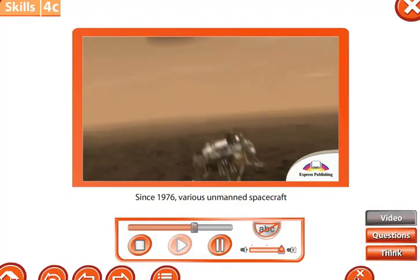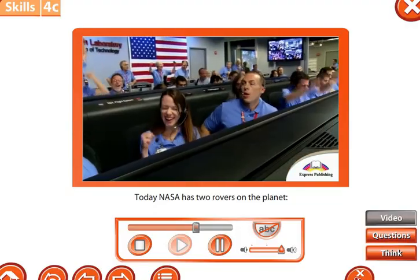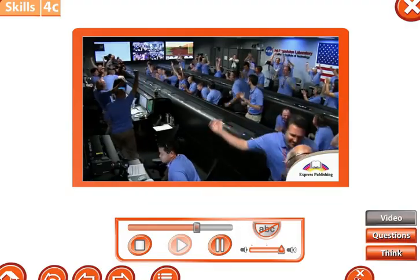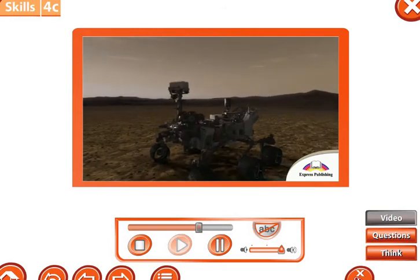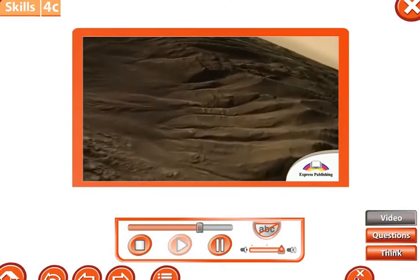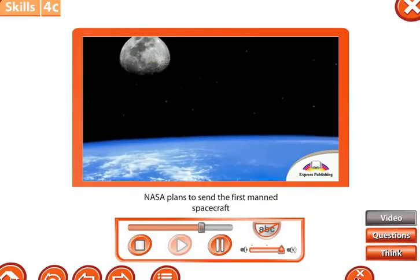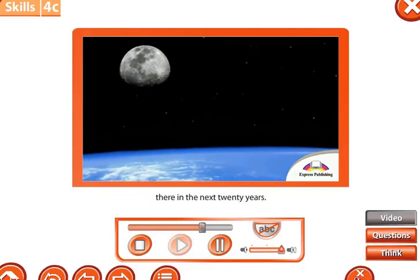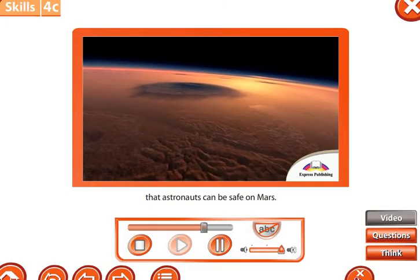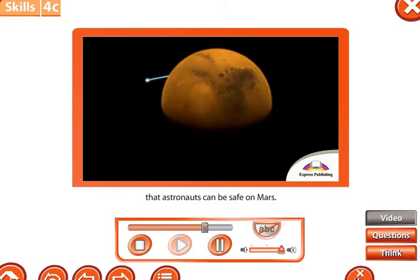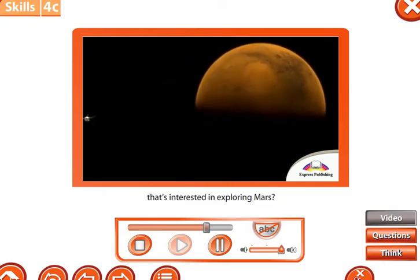Since 1976, various unmanned spacecraft have landed on Mars. Today, NASA has two rovers on the planet – Opportunity and Curiosity. These rovers are robots. Their job is to travel around and send information back to Earth. NASA plans to send the first manned spacecraft there in the next 20 years. But first, they have to make sure that astronauts can be safe on Mars.